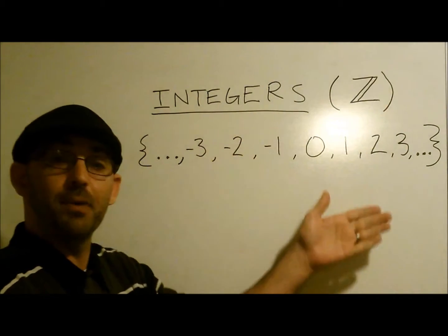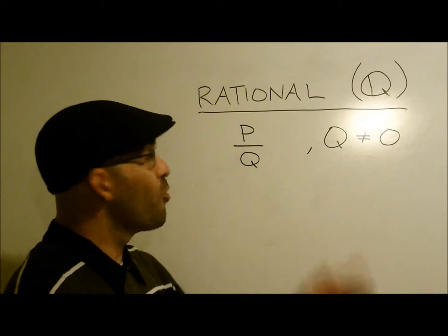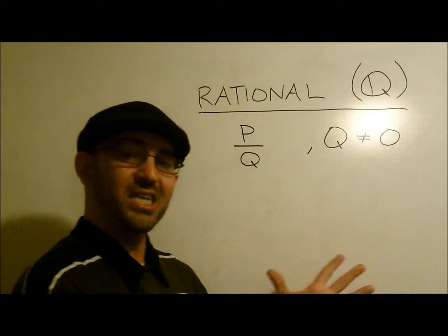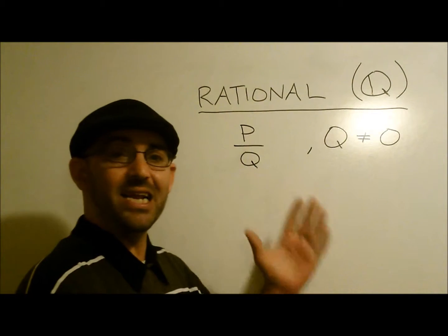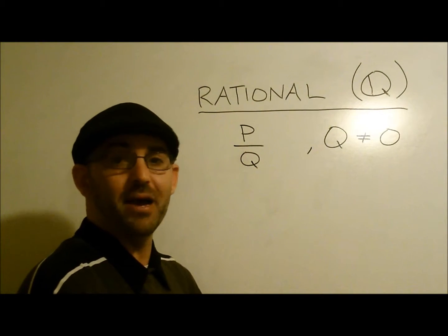Rational numbers is a ratio of any two integers. That means any number that can be represented by a fraction.